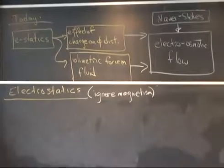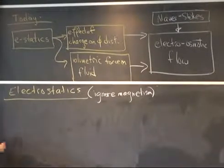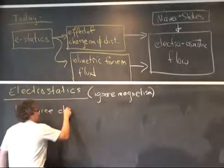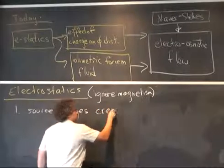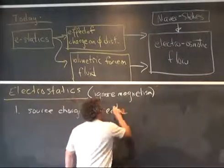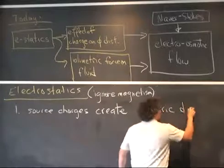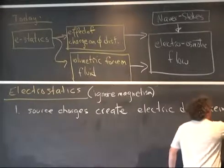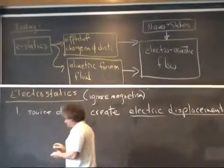In the electrostatic limit, if we ignore magnetism, there are really only a couple things we need to know. First of all, if we have a source charge, source charges create electric displacements.